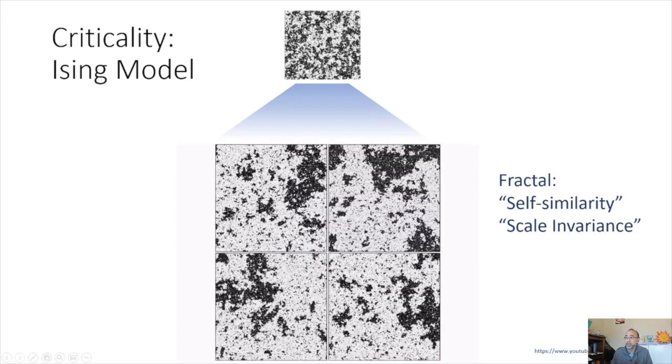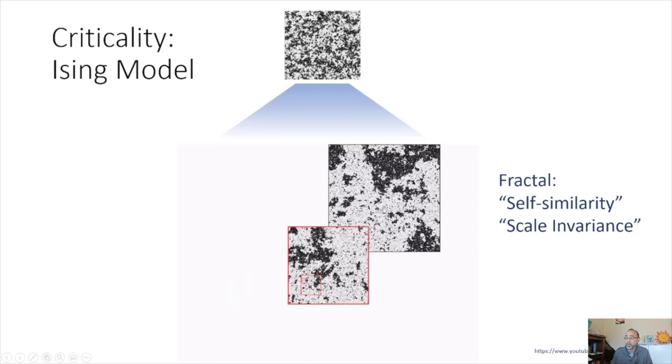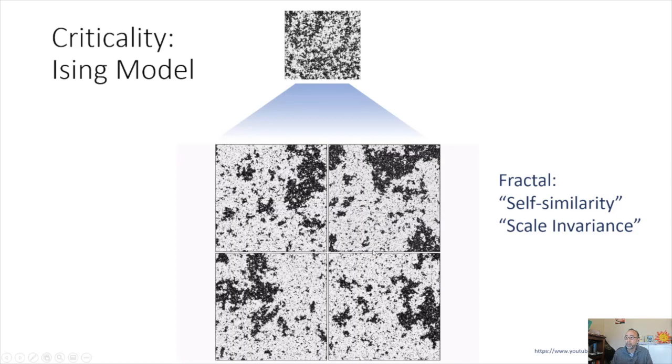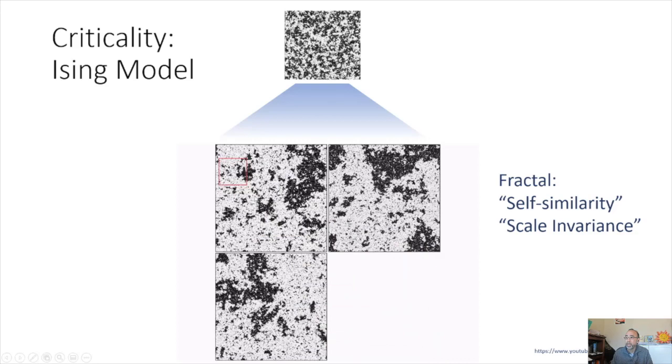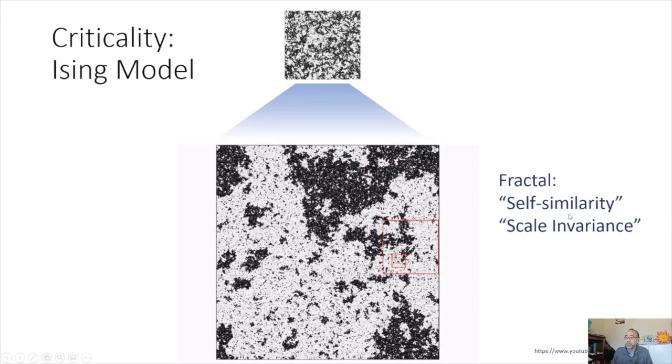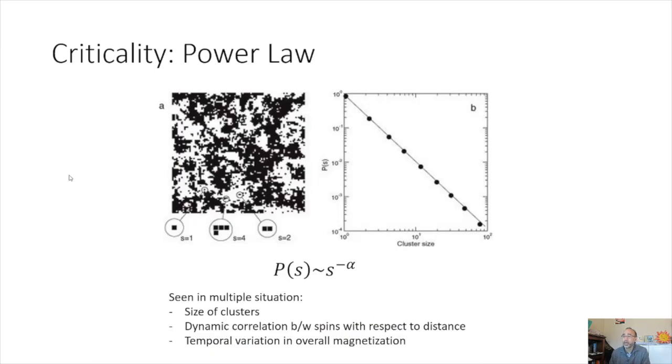And this is an example of this, where you could take a segment from this critical threshold, and you could zoom in within each other. And all four of these patterns look quite similar to each other, but they're existing at different scales. And so this explains the term self-similarity or scale invariance. It's at criticality that we see this power law relationship.